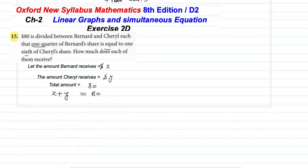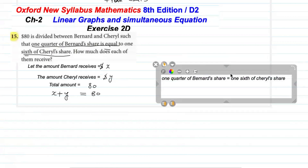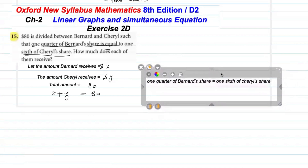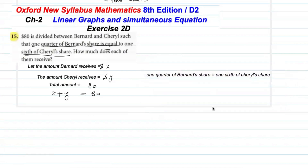The second statement says: one quarter of Bernard's share equals one sixth of Cheryl's share. According to this we will form the equation. One quarter of Bernard's share — Bernard's share is x dollars, so one quarter means one over four. We write: (1/4)x = (1/6)y.